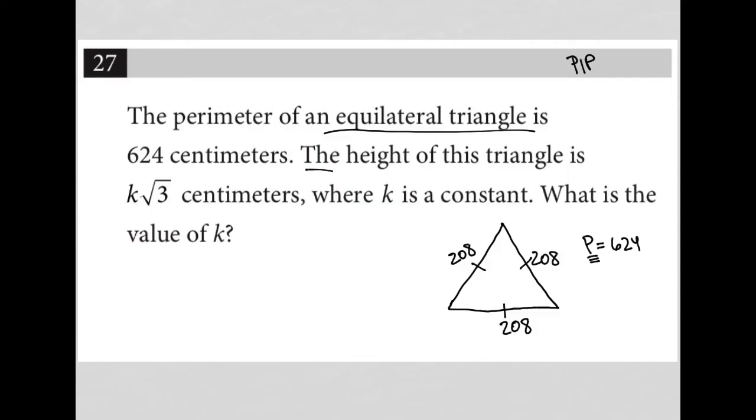The next sentence says the height of this triangle is k root 3. I'm going to just use a different color. So I'm going to draw a height here. Call this k root 3. Now, what have I done to my triangle?